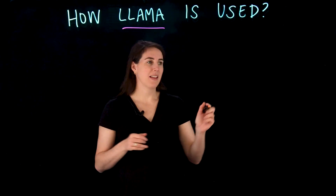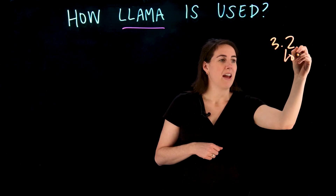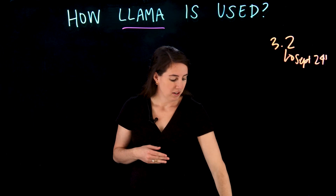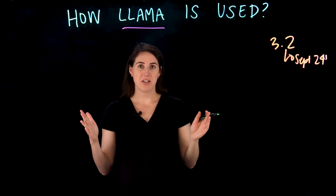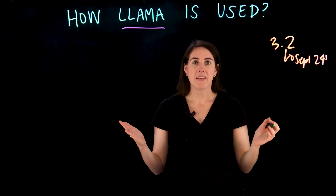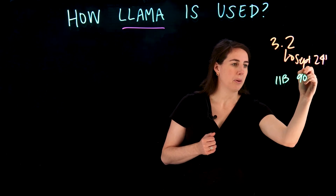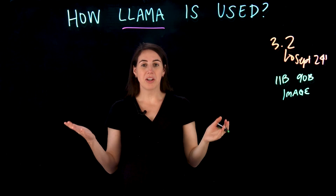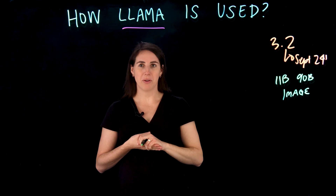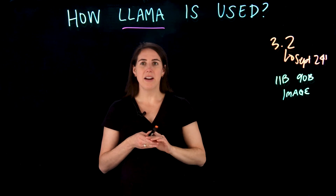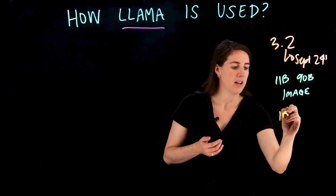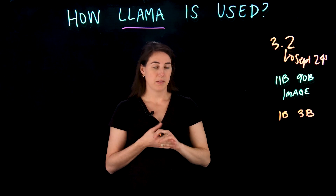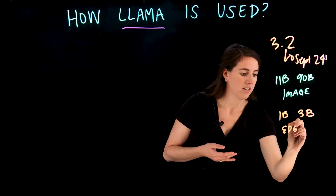Before we dive into the real use cases for Llama, let's talk about the latest Llama 3.2 release, which came out in late September of 2024. Llama 3.2 introduced two image reasoning use case specific models, ranging from 11 billion to 90 billion in size — where B stands for billions of parameters used to build the models. We also had a 1 billion and 3 billion release specific to lightweight text-only models that can fit on edge devices.